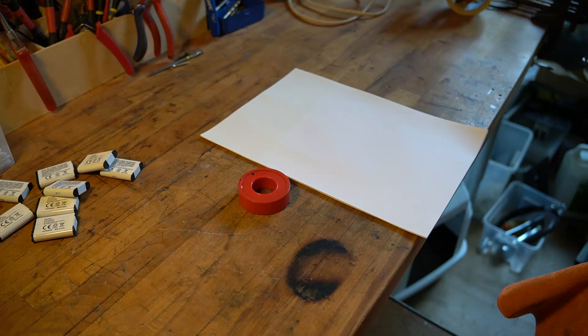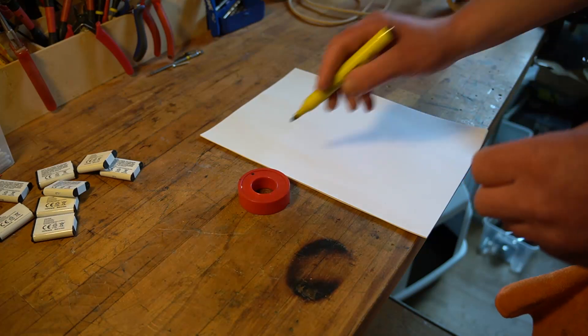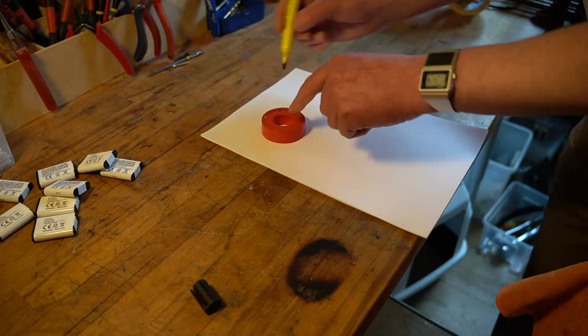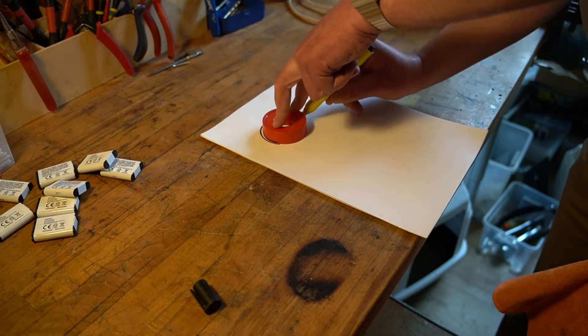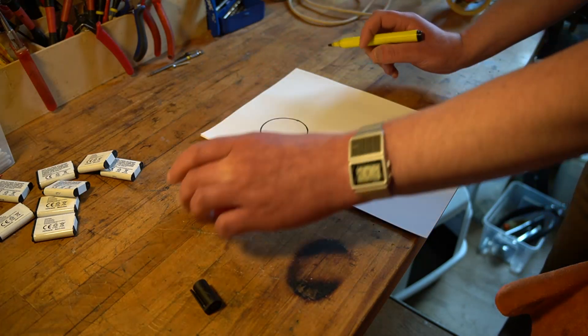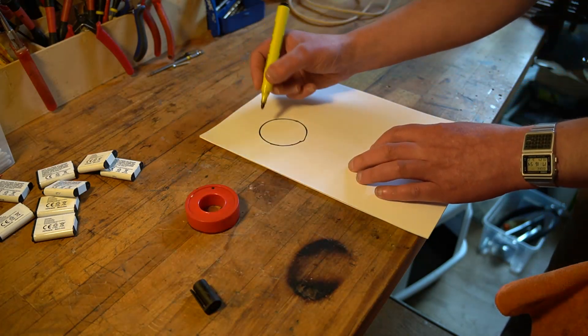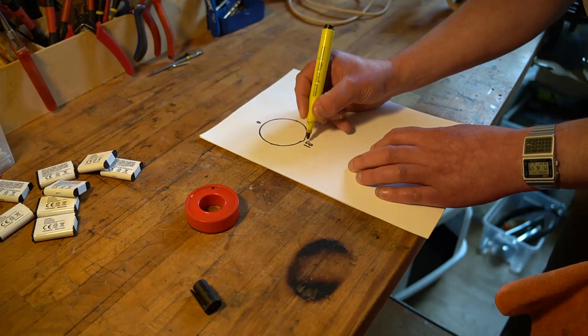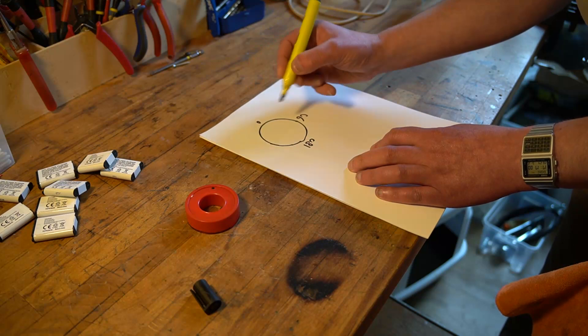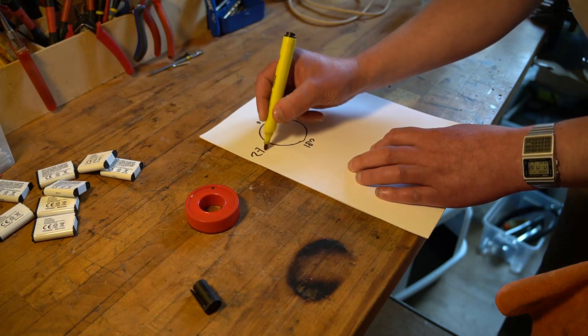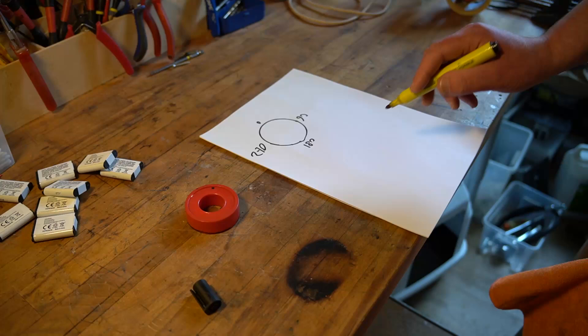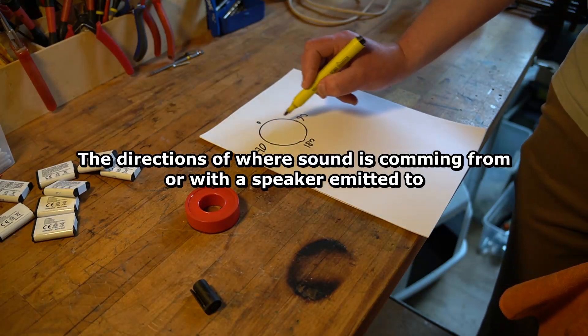Then you have cardioid and supercardioid, and then shotgun, etc. But these are a little bit different. Usually a polar pattern is drawn in a circle. So I'll draw a circle. Let's say this is zero degree, this is 180, 90, and 270. So you've got a circle, and then we're going to draw in the polar pattern of the microphone.